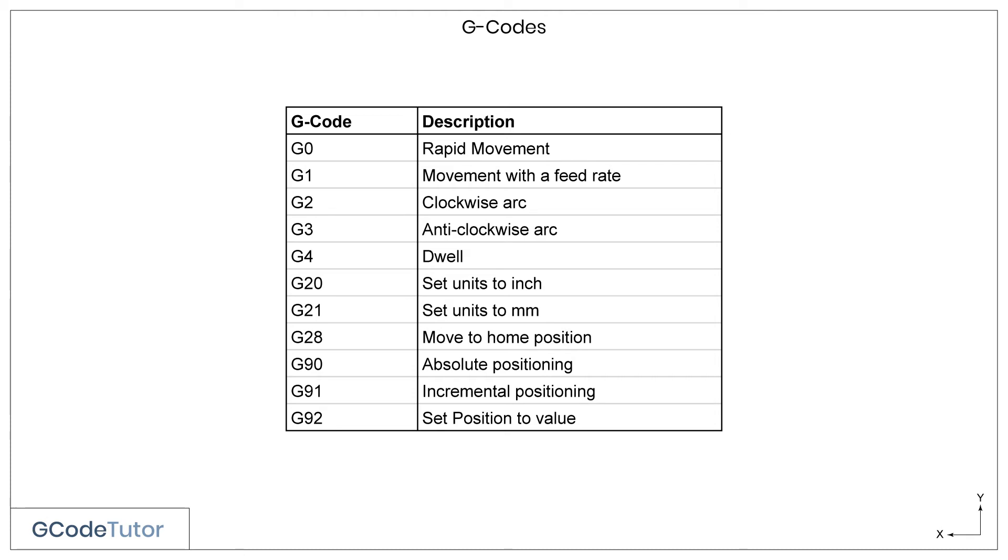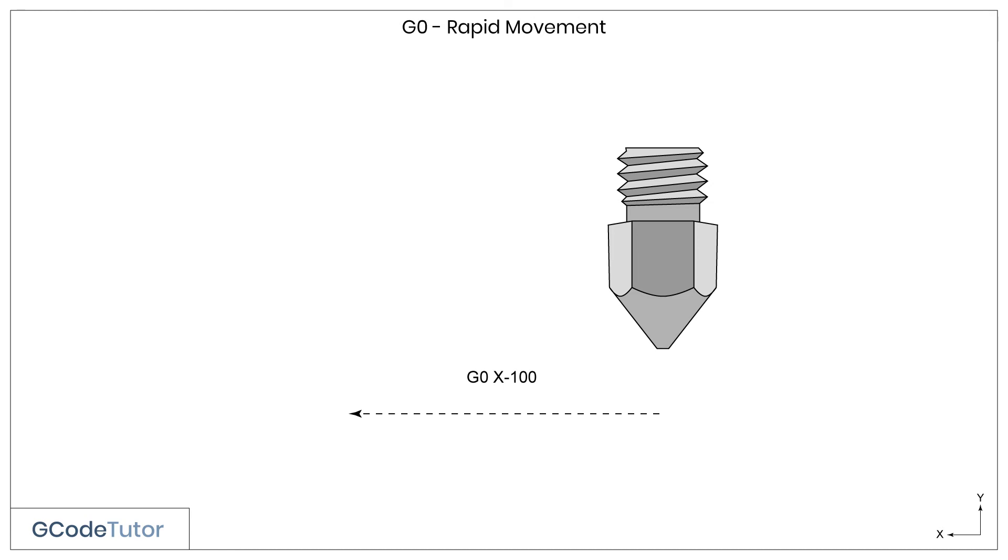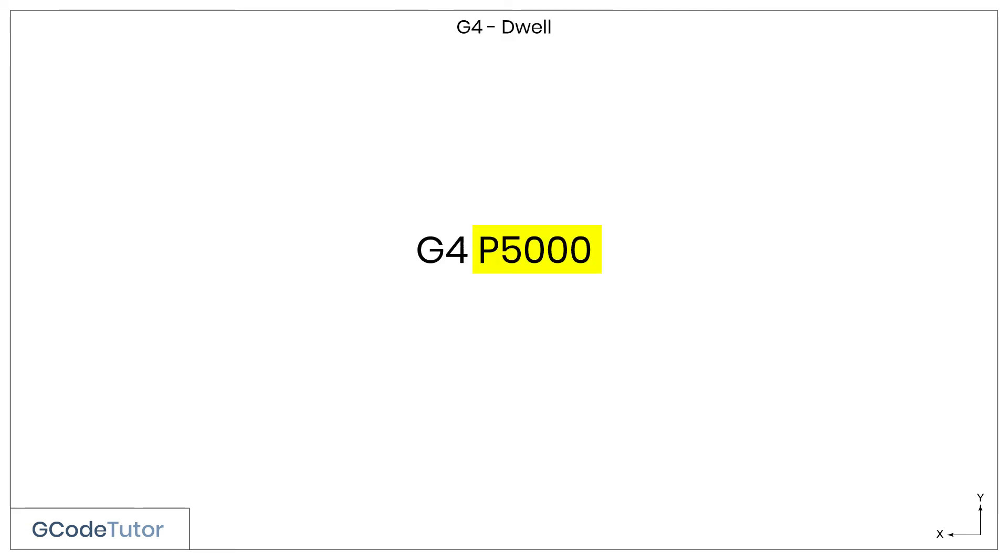Not only is G-code a fun language to learn, it's really quite simple. It uses a collection of G-codes and M-codes and values to build up a geometric shape that we can read easily and see what's going on.